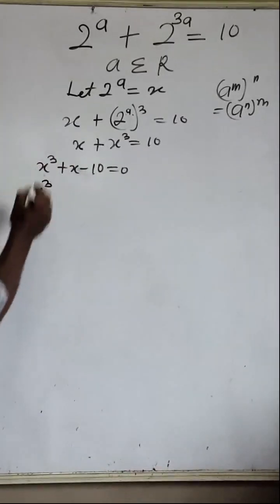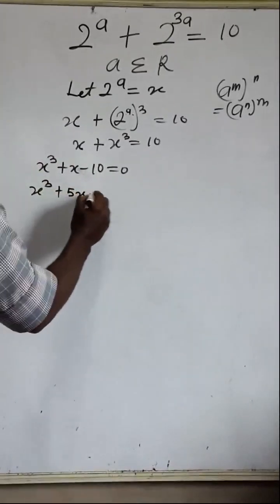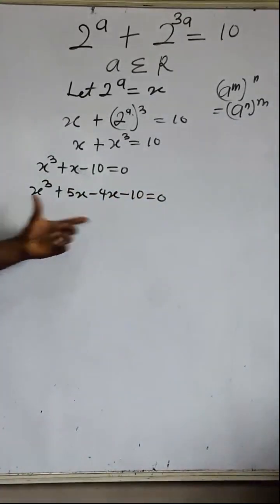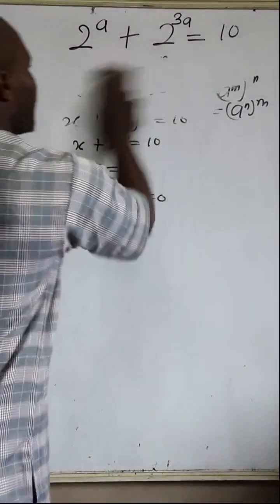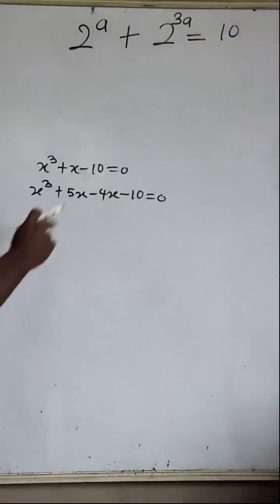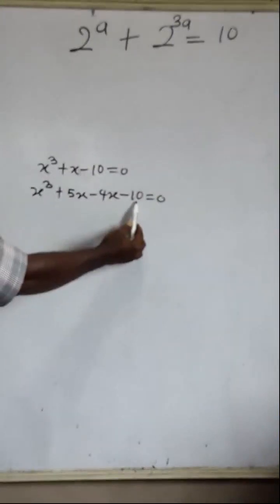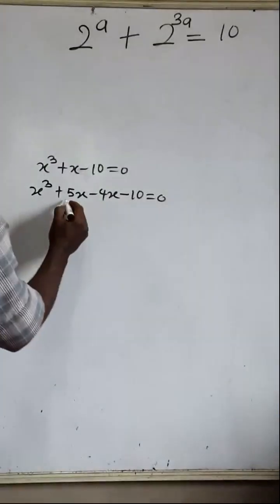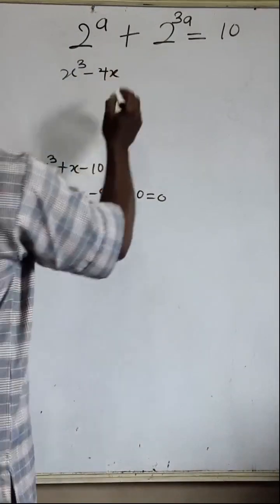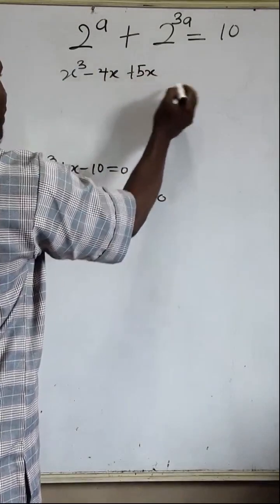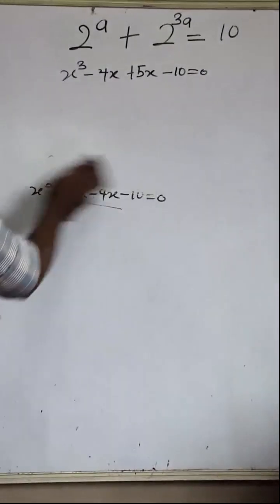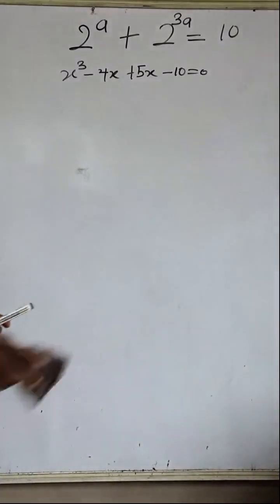We rewrite as x cubed + 5x minus 4x minus 10 = 0. Rearranging for grouping: x cubed minus 4x + 5x minus 10 = 0. We are using the grouping method to factorize this equation.